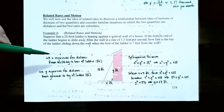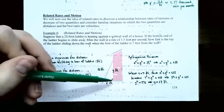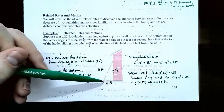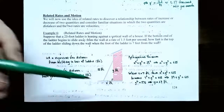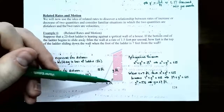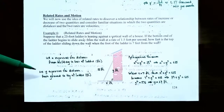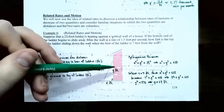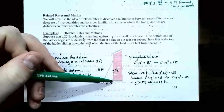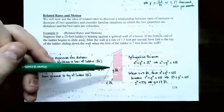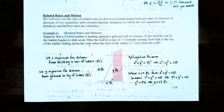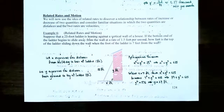Let X represent the distance from the building to the base of the ladder in feet — this is the horizontal distance. Since the ladder is sliding down, X will be increasing. Let Y represent the distance from the ground to the top of the ladder — the vertical distance. Y will be decreasing because the ladder is sliding down. Remember, the first step in solving related rates problems is to draw a picture and write down all the variables that are changing.